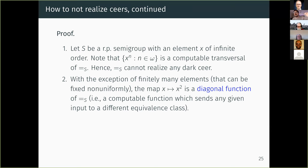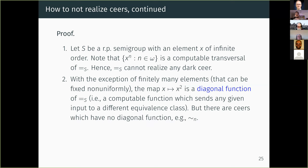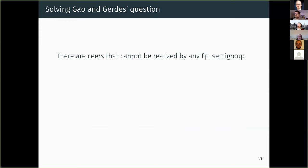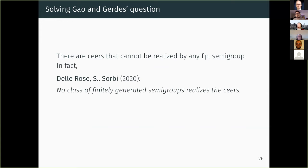For semigroups with only finitely many idempotents: you can fix those elements non-uniformly, and then except for those elements you have a map from x to x-squared which is a diagonal function mapping equivalence classes to different equivalence classes. But there are equivalence relations that do not have this diagonal function — for instance, the restriction of PA-provable equivalence to the sigma-n formulas. So in order to realize ceers, the class of algebras must contain semigroups with infinitely many idempotents.